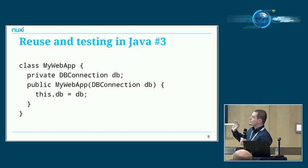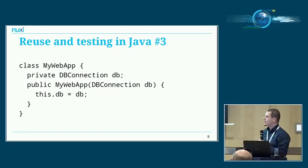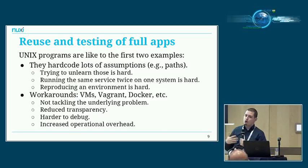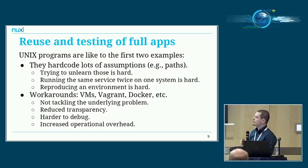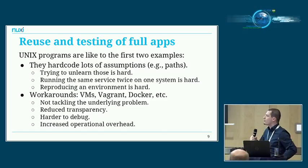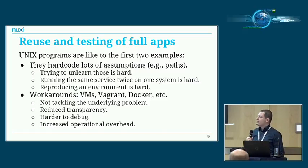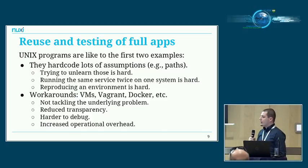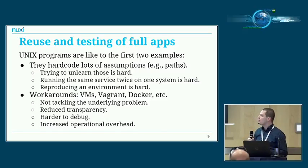Now looking back at UNIX programs — no longer at individual classes, but entire UNIX programs — my observation is that they are really like poorly written C++ code. They all hard-code a lot of things that should instead be injected into the application. So it's really hard to actually disentangle all those things that the application does.